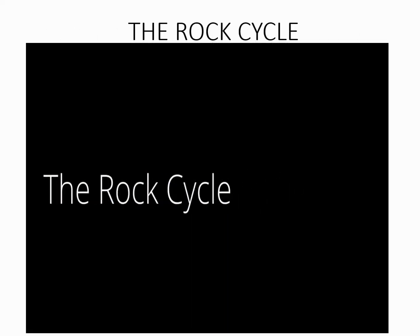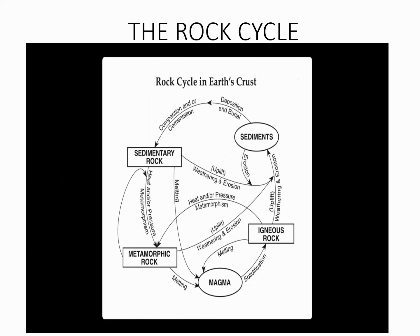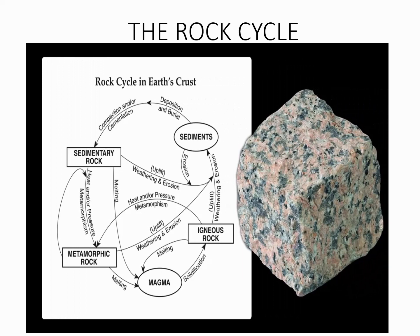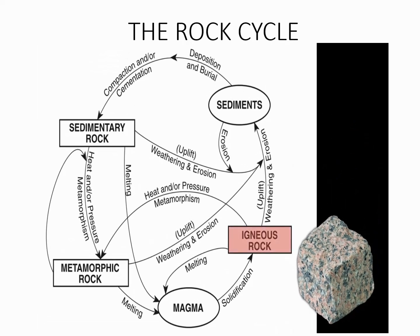Let's take a quick look at the rock cycle. Here's a diagram showing the rock cycle in the earth's crust. It shows the different types of rocks and how they can change over time. Here is a chunk of an igneous rock known as granite — made up of intergrown crystals of potassium feldspar, quartz, and biotite, which gives it its speckled look. Granite is an igneous rock which forms from the solidification of melted material — magma or lava — and forms deep underground from the slow cooling of magma. The question is: what can happen to this igneous rock over time? There are a handful of possibilities.